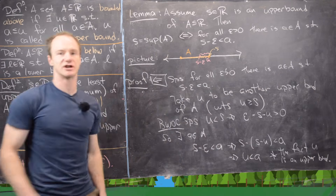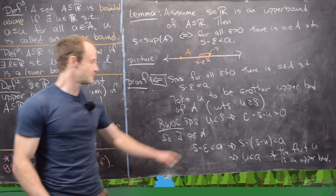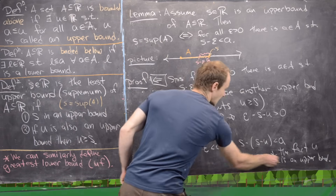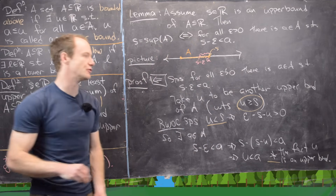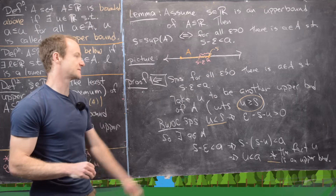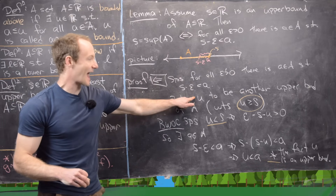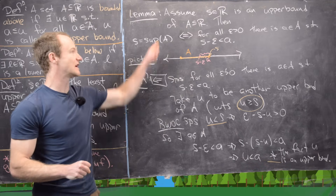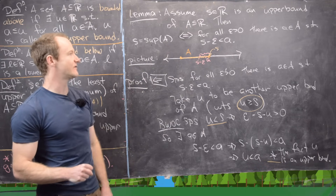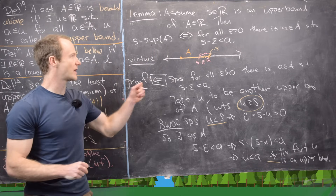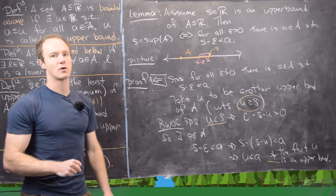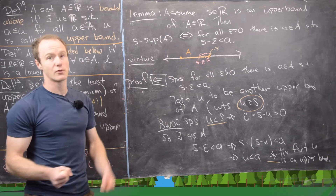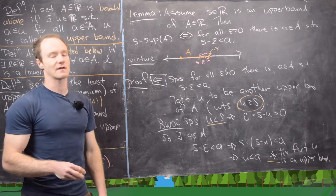So U less than S led to a contradiction, which means we must have U greater than or equal to S. So if we have another upper bound, it has to be bigger than or equal to our given upper bound, making our given upper bound the least upper bound. This is a pretty important classification of the least upper bound.